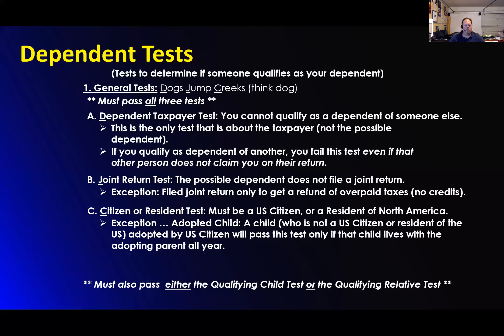The citizenship or residency test: they must be a citizen or a resident of North America. There is only one exception — if it's an adopted child, a child who is not a U.S. citizen or resident of the U.S., adopted by a U.S. citizen, will pass this test only if that child lives with the adopting parent all year.